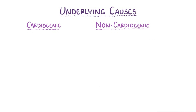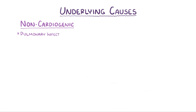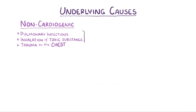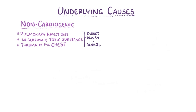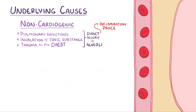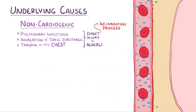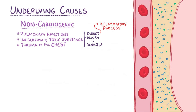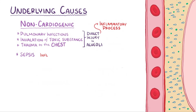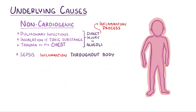Non-cardiogenic causes of pulmonary edema include things like pulmonary infections, inhalation of toxic substances, and trauma to the chest. All of these can cause direct injury to the alveoli, and when this happens there's usually an inflammatory process that makes nearby capillaries more permeable. As a result proteins and fluid enter the interstitial space. Another cause is sepsis, and the key difference is that in sepsis the inflammatory process happens throughout the body rather than just in the lungs, so in addition to pulmonary edema, sepsis can cause extra fluid in the interstitial space of tissues throughout the body.